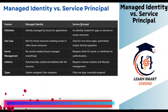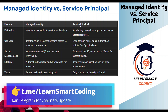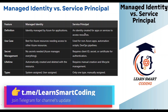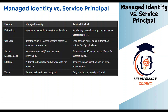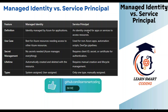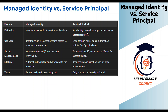On the other hand, service principals are an identity created by a human — we go to the portal and create the identity that is used for apps or services to access resources. Managed identity is managed by Azure; service principal is managed manually by us, like creating or assigning some roles. After that, everything happens automatically.